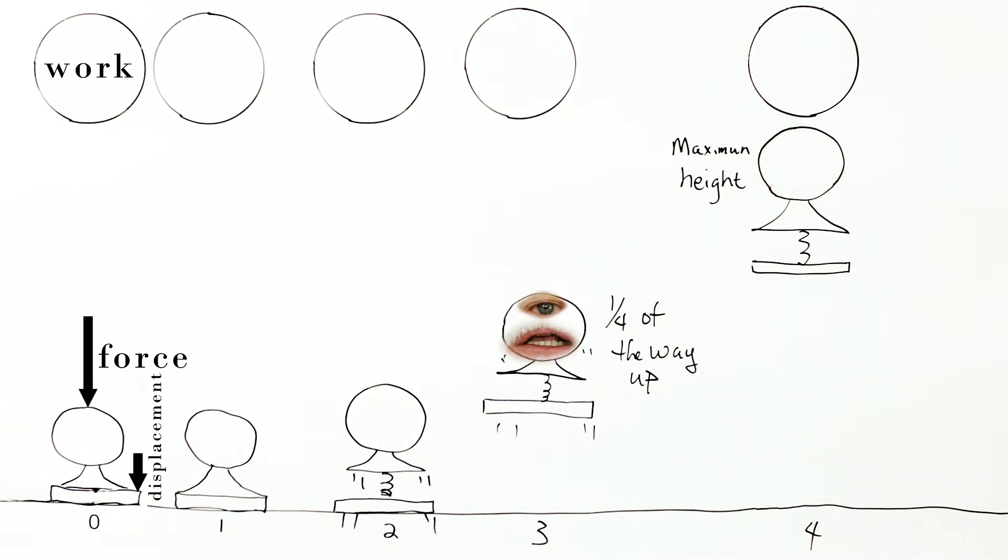Somewhere in the middle, there's going to be a combination of kinetic and gravitational potential energies. You are to determine the spring constant of the spring by doing simple measurements.